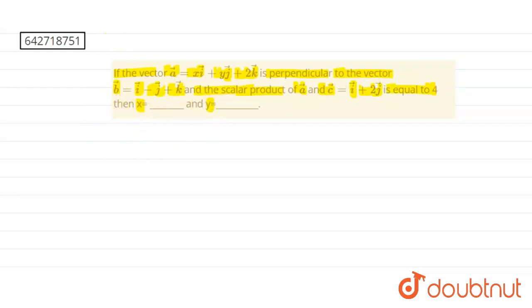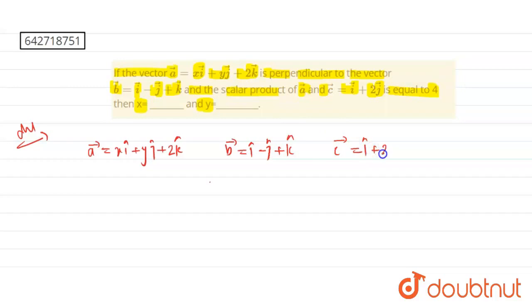So let's go with the solutions here. So the question given has vector A equals xi cap plus yj cap plus 2k cap, and vector B equals i cap minus j cap plus k cap, and vector C equals i cap plus 2j cap. So the question given is vector A and vector B are perpendicular to each other.